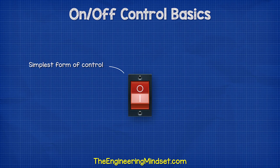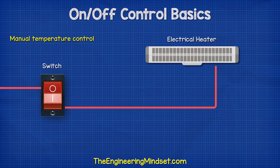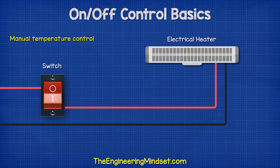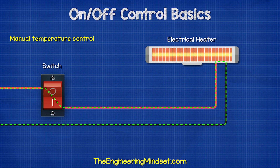The simplest form of control is an on-off switch. For example, to control the heat output from an electrical heater, we can manually switch it on or off.